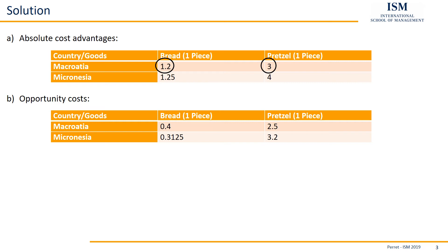We can interpret these in the following way: one pretzel in Micronesia takes the time of 2.5 breads. That's the relation and the way to interpret these opportunity costs.